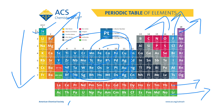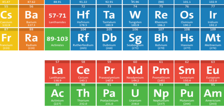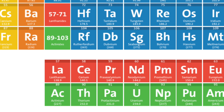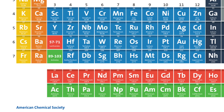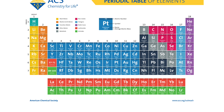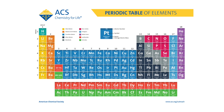The first series is named after the element lanthanum — so they are called lanthanides. The second is named after actinium — so they are called actinides. These two periods are specially named after these two elements. Another category of division is according to reactivity: whether elements are metals or non-metals.